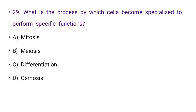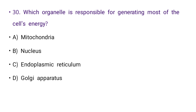Next: What is the process by which cells become specialized to perform a specific function? Options: mitosis, meiosis, differentiation, or osmosis. The right answer is C: differentiation.